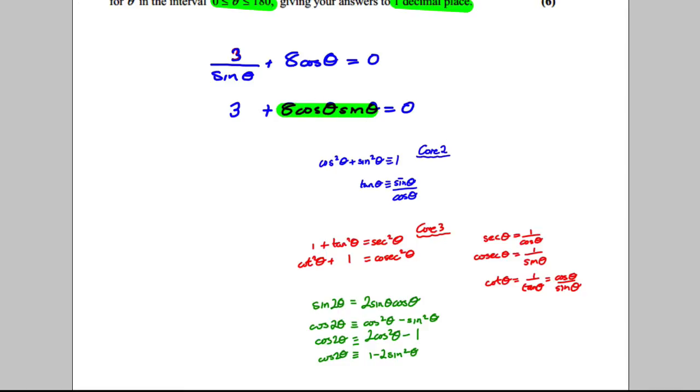Does that look like anything we know? Well, to me, it looks like the sine double angle formulae. Because look here, sine of 2θ or sine of 2x is 2 sine θ cosine θ. So this here looks something I could use.